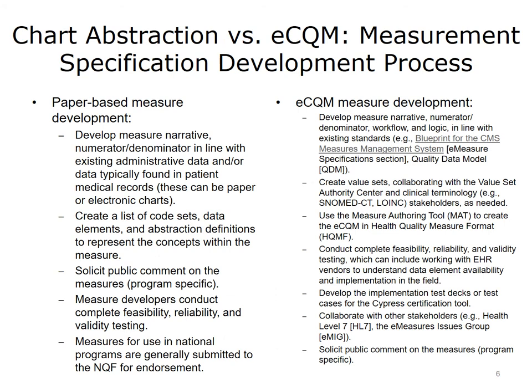Most quality measures developed for use in national programs have well-defined and often NQF National Quality Forum endorsed specifications created by measure development professionals. Since eCQMs are a completely electronic system, eCQM specifications also need to be developed in a standardized and computer-readable format. This slide shows the significant measure development differences between eCQMs and chart abstraction measures. Under the eCQM column, you will see several components that ensure electronic specifications, eSpecs, are standardized to facilitate machine readability without additional human intervention.